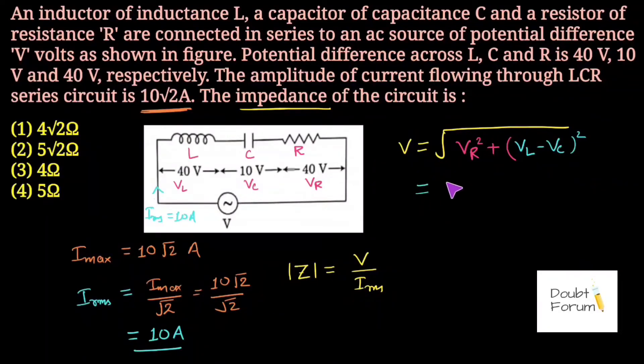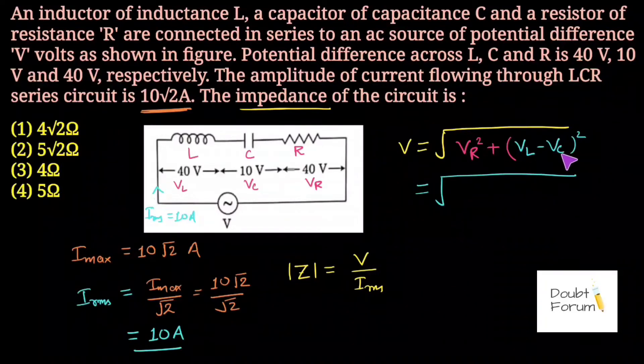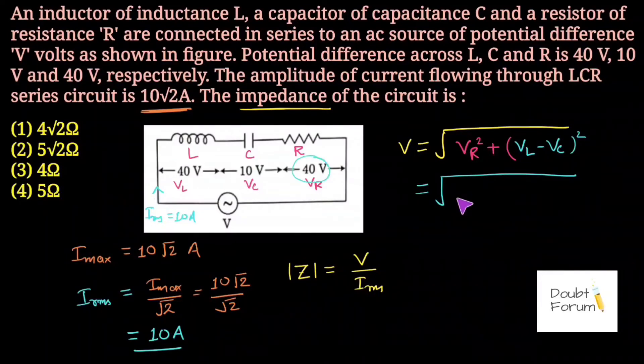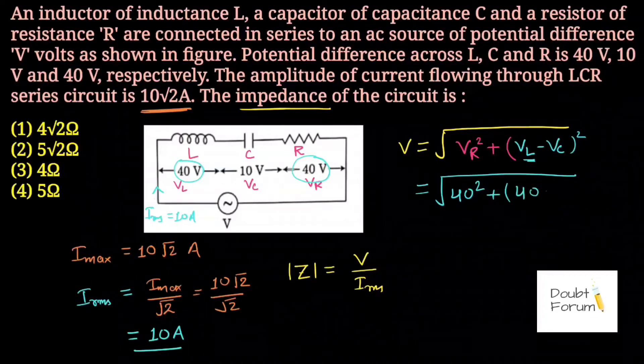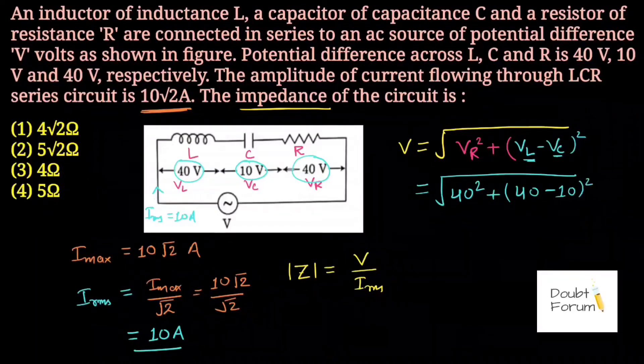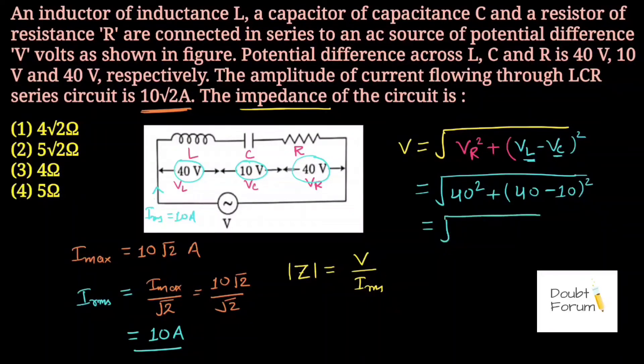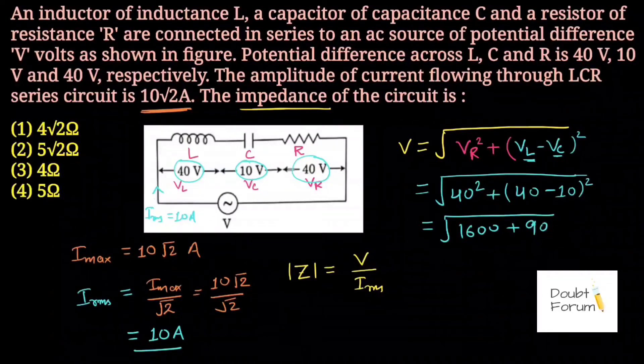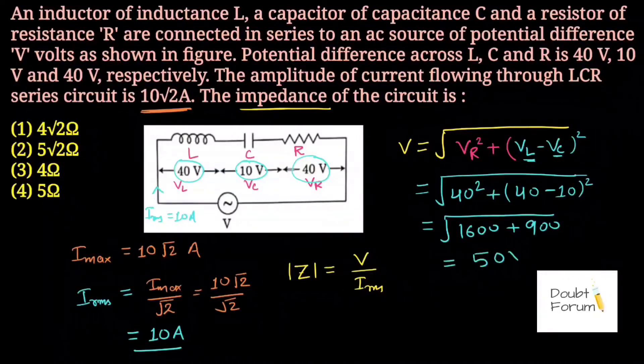Now we simply put the values of VR, VL, and VC given in the question. VR is 40 volts, so we write 40² plus, VL is also 40 volts, so this is (40 - 10)² where VC is 10 volts. Simplifying this equation, we get 1600 plus 900, which equals 50 volts.